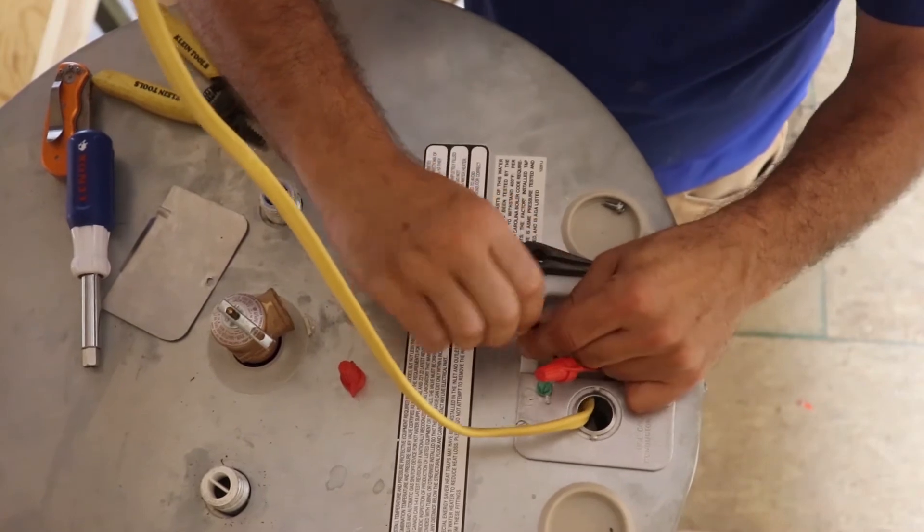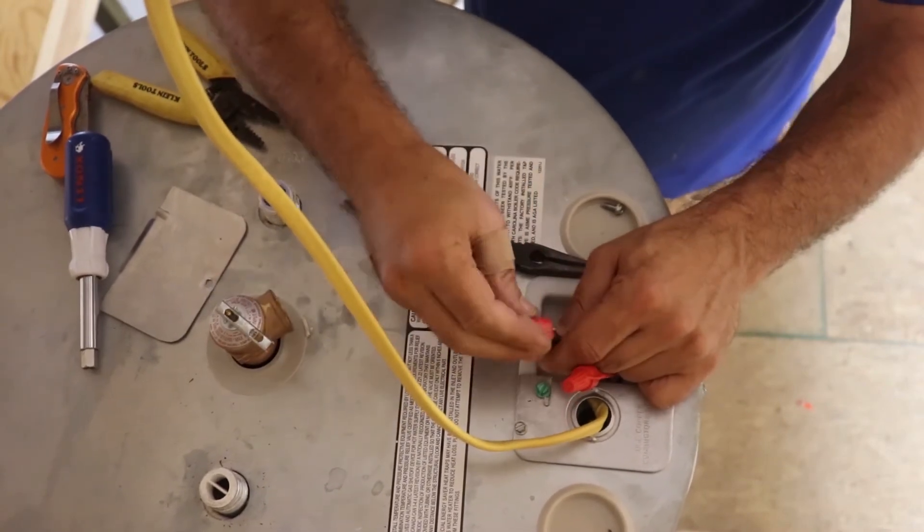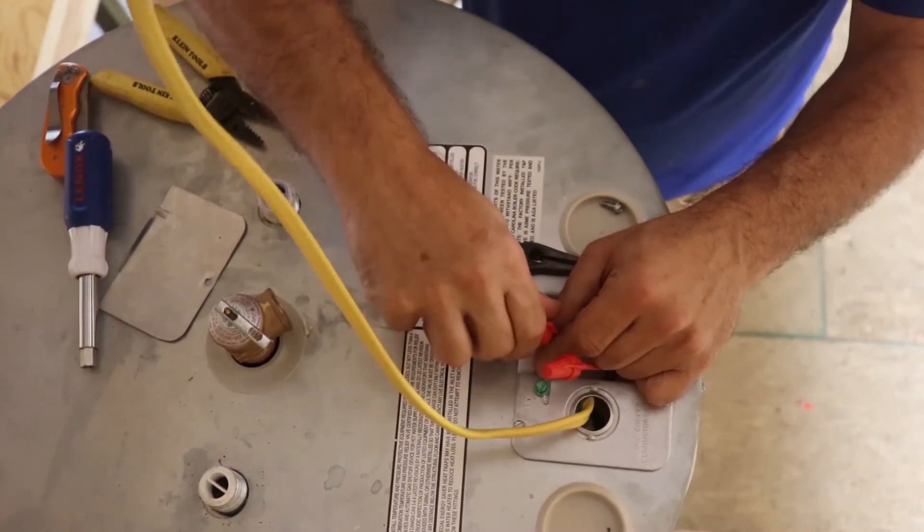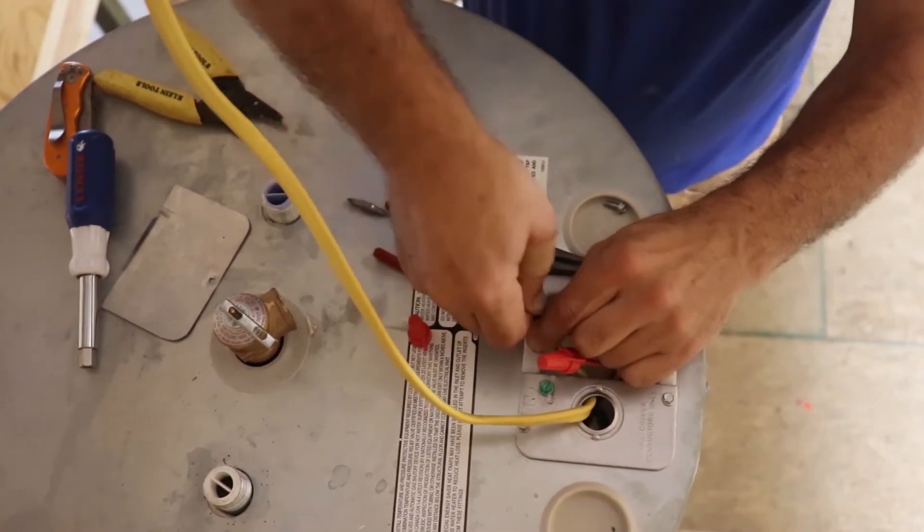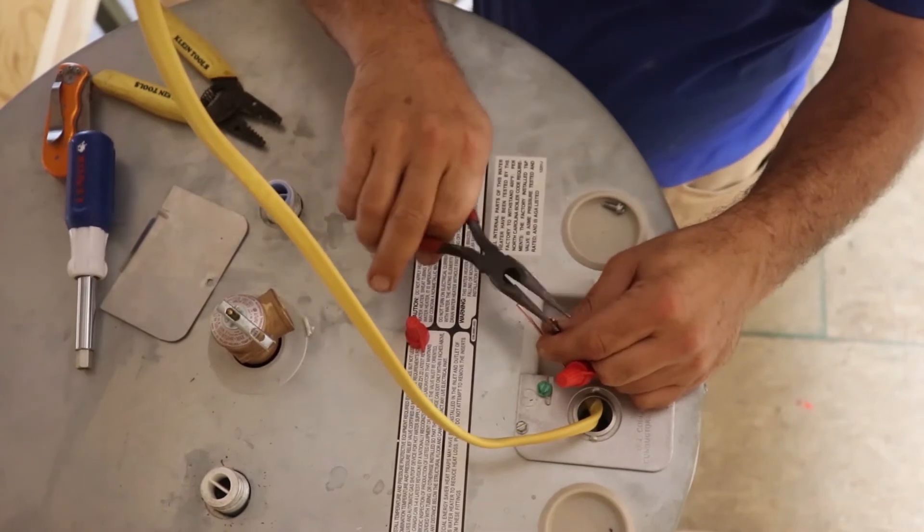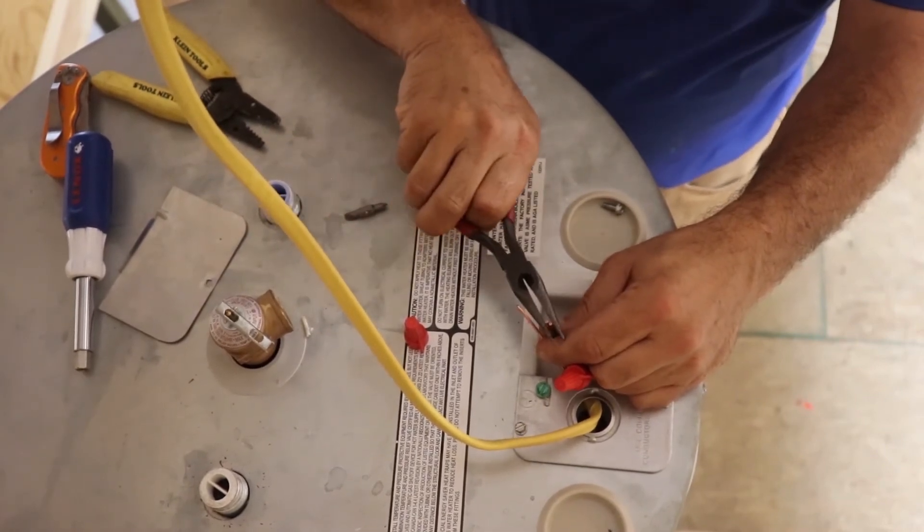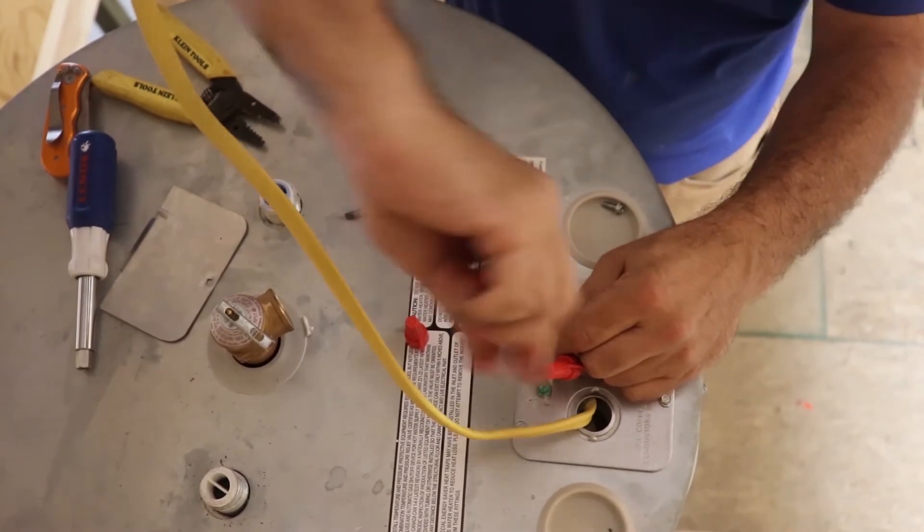And then you're going to want to do your black one as well. Now some of the guys, electricians and stuff, they'll just take the two wires, put them together like that and screw that cap on. And it'll probably hold it, but I always like to do it just one better. Just make sure that it's not going to go anywhere.